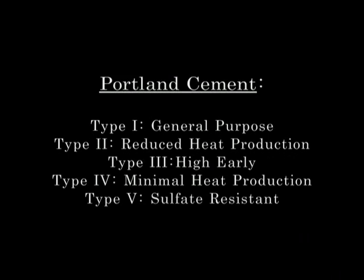Type 4 minimal heat production reduces even less heat than Type 2, so it's used in really large scale projects like dams where you need a long time of workability. Type 5 sulfate resistant is used in areas where your soil or ground water has high alkalinity.